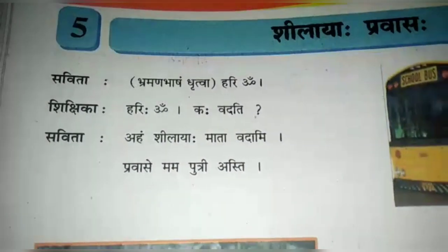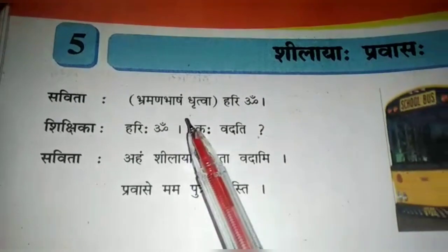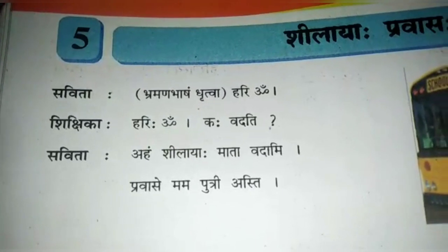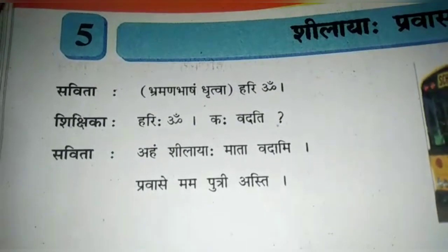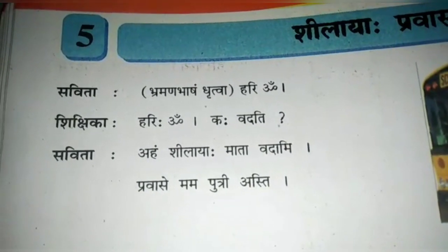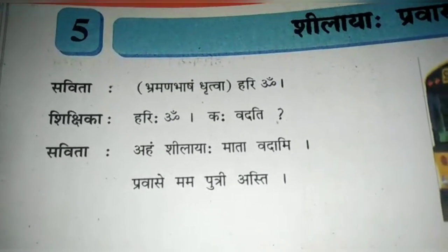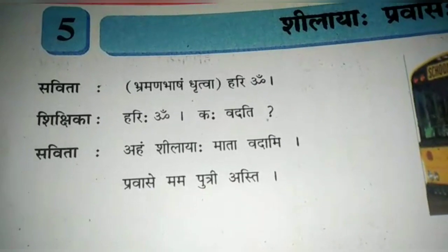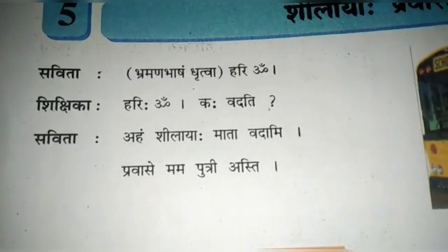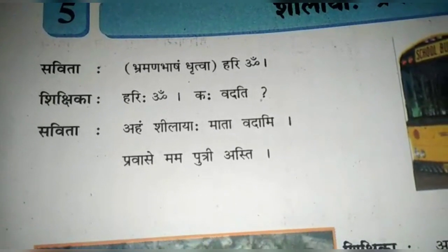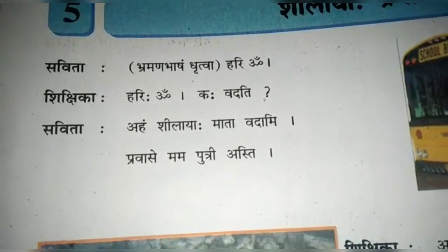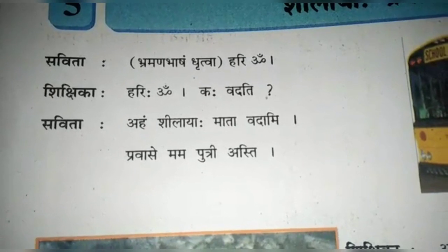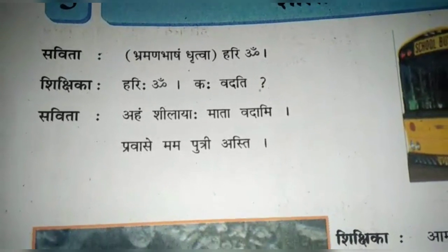Now let's start the lesson: Sila ya Pravas, Sila's Journey. 'Savita brahman bhasham dhrutwa hariyo' — brahman bhasham means mobile. Savita means Mrs. Savita; she is Sila's mother. Brahman bhasham dhrutwa means holding or switching on the cell phone. Hariyo means hello — the formal word used for greeting. Kavadati means who is speaking. Sila ya mata means Sila's mother. Vadami means I'm speaking. Pravasi means for a journey or trip. Am means yes — this is the word showing agreement.